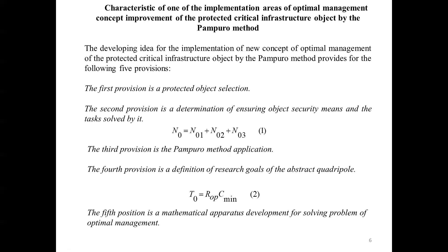The general or total costs spent to ensure the safety of the protected object consist of three components — see Formula 1. The first is the cost of preventing the catastrophic event. The second is the cost of liquidating consequences in the case of this catastrophic event. The third is the means of eliminating consequences in the case of danger. The third provision is application of the Pampuro method, which allows us to consider a technological object from the standpoint of ensuring security as an abstract hypothetical object. Its structure consists of some elements, allowing a single protected critical infrastructure object to be considered as a quadripole.